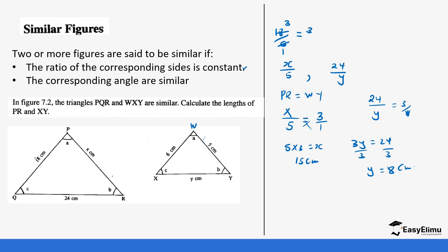You notice that the angles are also equal. As you can see, we have angle C in this triangle and also angle C in this triangle. Angle A and A are equal, and angle B and B are equal. So we say these two figures are similar because their corresponding ratios are equal and their angles are equal.